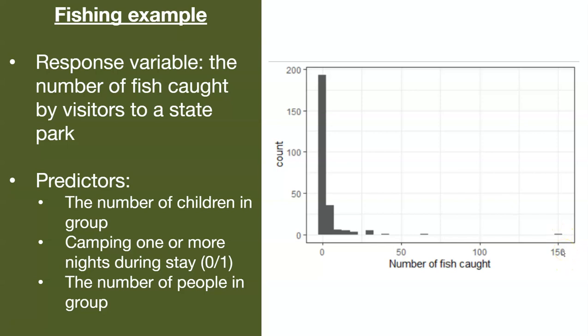We might be interested in saying, what's going on here? Are there specific attributes about each group that went out fishing that we might be able to say something about the number of fish they caught? Our predictor variables here are the number of children in the group. If you have more children in the group, maybe that's more people that might be fishing.